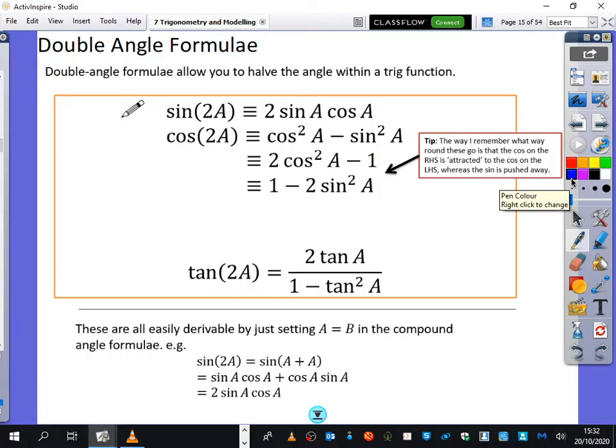So at the bottom it says these are all easily derivable by just setting A to be equal to B in the compound angle formula. So the sine of 2A is just the same as the sine of A plus A, which is sin A cos A plus cos A sin A. Well, they're the same thing as each other, so I've got two lots of sin A cos A.